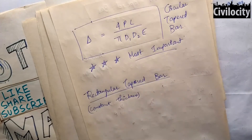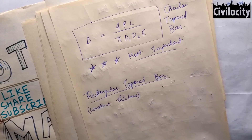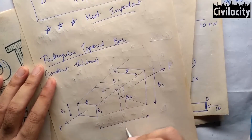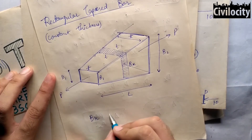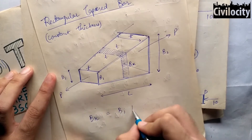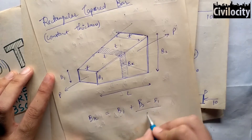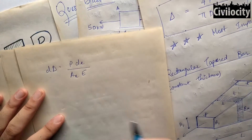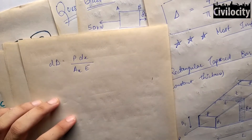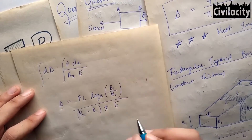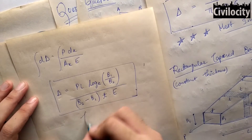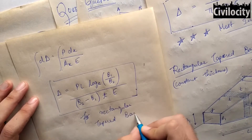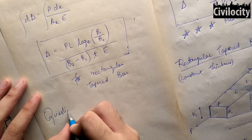Case 2 is deflection of a rectangular tapered bar. Suppose we have a rectangular bar of constant thickness t and varying width b, subjected to load P on either side, having length L. The width bx of the elemental section is equal to b1 plus (b2 minus b1) divided by L into x. The area of this element equals bx into t. Integrating the elemental deflection formula up to length L, the final formula is: delta equals PL times log_e(b2 over b1) divided by (b2 minus b1) into t into E, where b2 is the larger width and b1 is the smaller width.